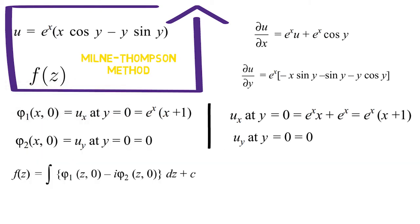After finding these values, we simply substitute z in place of x in both psi 1 and psi 2 and write it in the form of anti-derivative f dash of z. We then integrate this anti-derivative to find f and obtain the solution.